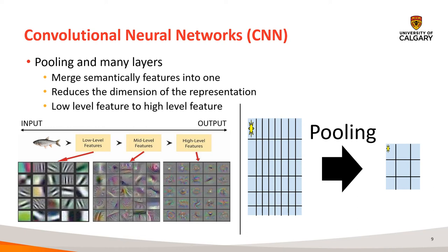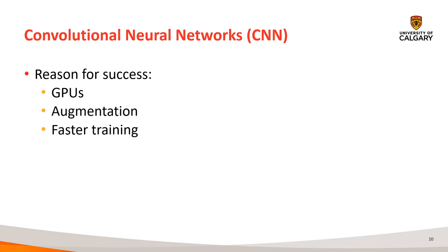Going back to the sun example, you can think that after a pooling layer, the number of possible places in the image where the sun can be is reduced. The paper cites some reasons for the success of CNNs: efficient use of GPUs, more training examples due to data augmentation, and faster training due to progress in hardware, software, and algorithmic parallelization.